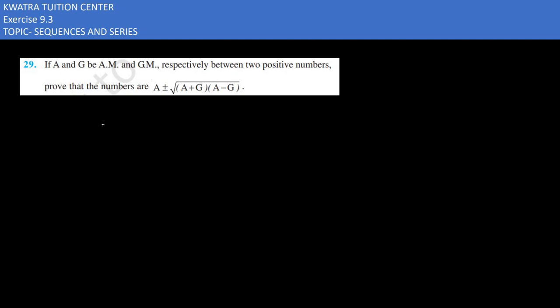Let's start with the 29th question. It says if A and G are AM and GM respectively between two positive numbers, prove that the numbers are this. Positive numbers are let's say a and b.